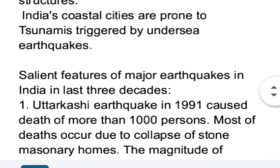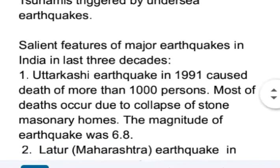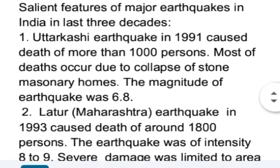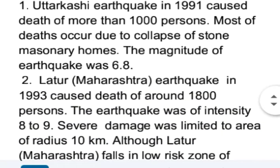Now, the second part of the question: salient features of major earthquakes in India in the last three decades. First is the Uttarkashi earthquake, which happened in 1991. It caused the death of more than 1,000 persons. Most deaths occurred due to the collapse of stone masonry homes. The magnitude of this earthquake was 6.8.